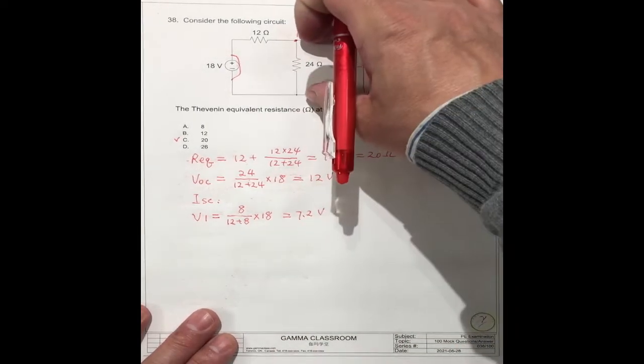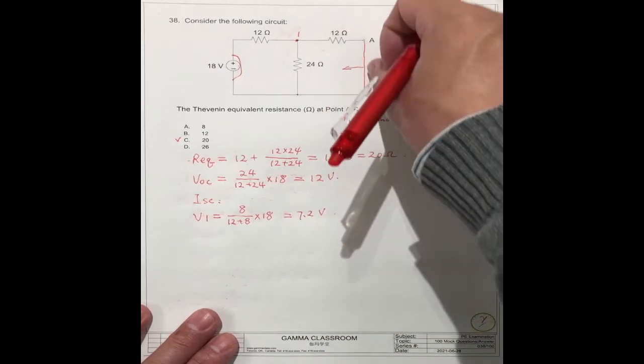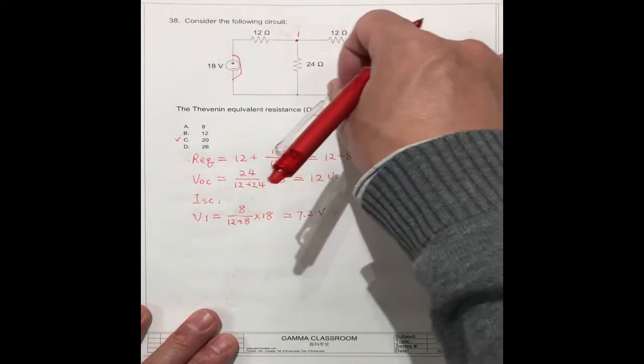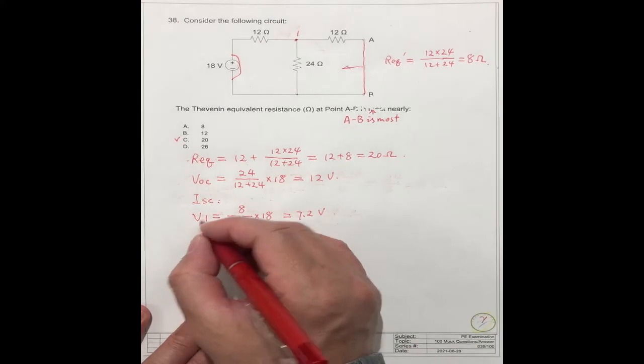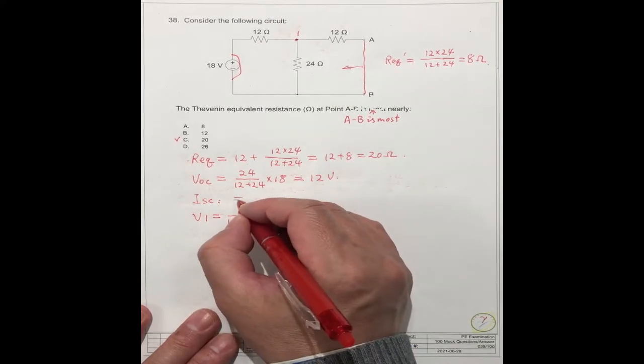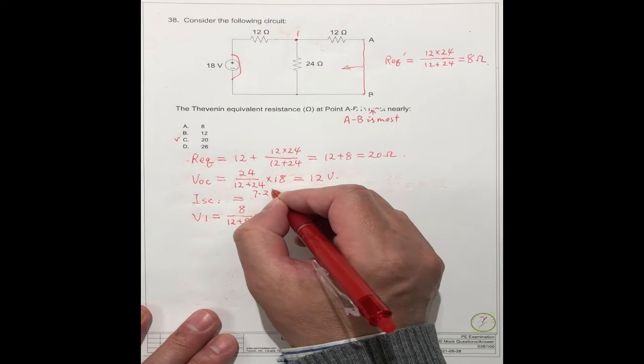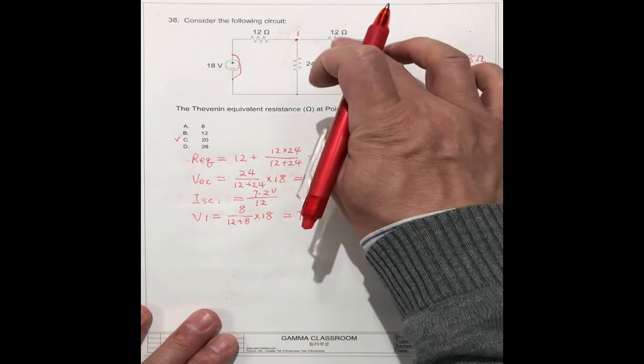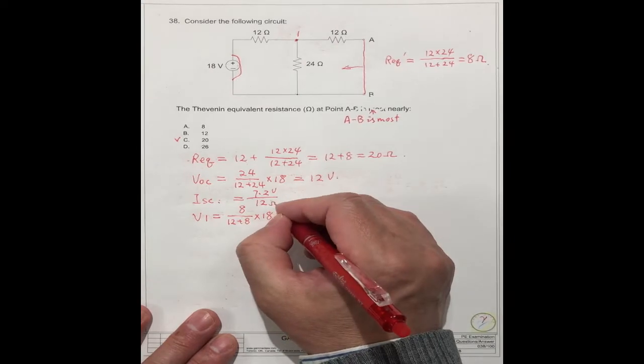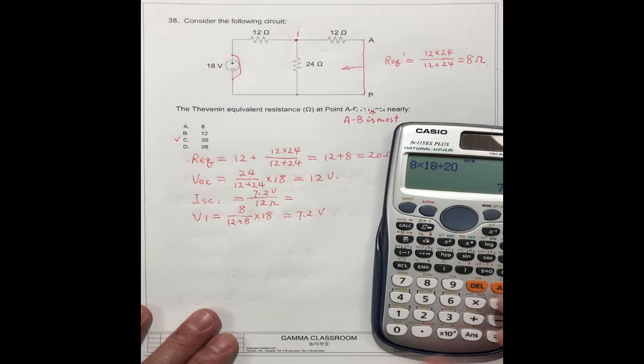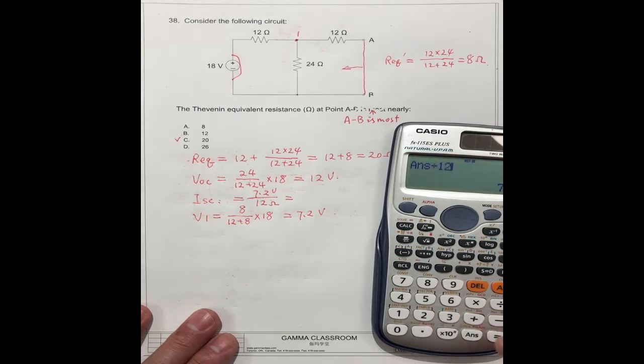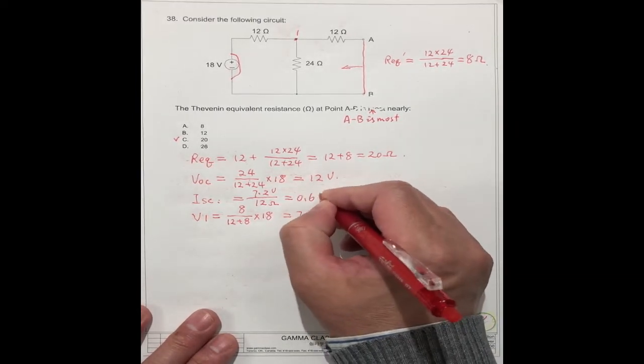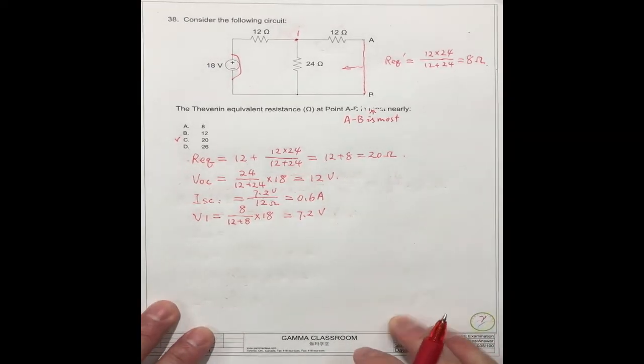We know this voltage. We know this circuit resistance. Then we can get the current from this in this circuit. The I_SC should be equal to 7.2 volts divided by 12 ohm. This is equal to 0.6 amperes.